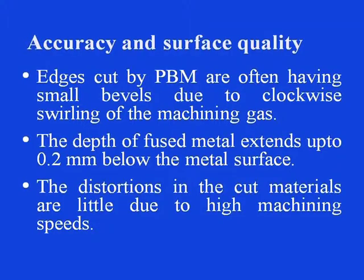Regarding accuracy and surface quality in plasma beam machining: edges cut are often having small bevels due to clockwise swirling of the machining gas. The depth of fused metal extends up to 0.2 millimeter below the metal surface. Distortions in the cut materials are little due to high machining speeds. Since this is also a thermal based process, a heat affected zone of 0.25 to 1.2 millimeter thickness is reported. Clean smooth surfaces are produced in plasma with very few micro cracks below the heat affected zone. Materials can generally be cut within a tolerance of plus minus 1.6 millimeter.